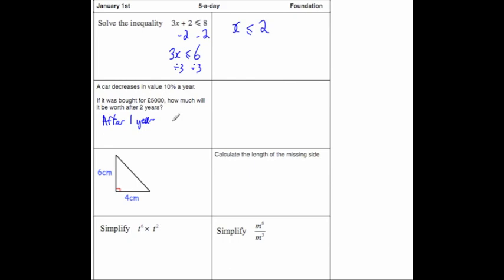We're going to take that away. So £5,000 take away £500, that's 10% of it, leaves you with £4,500. So that's how much it'll be worth after 1 year.